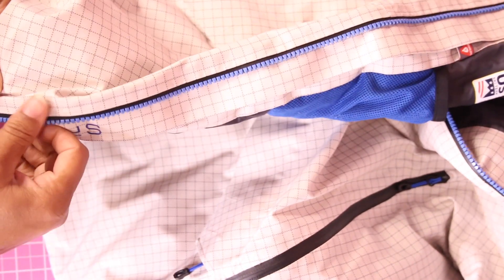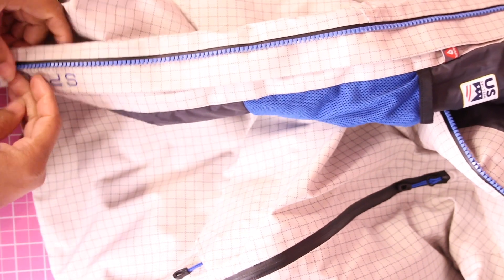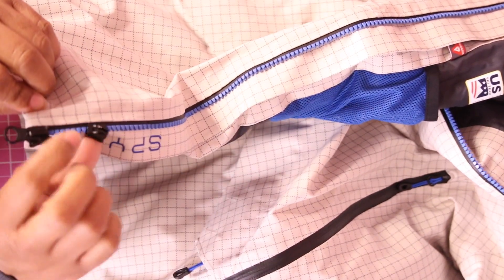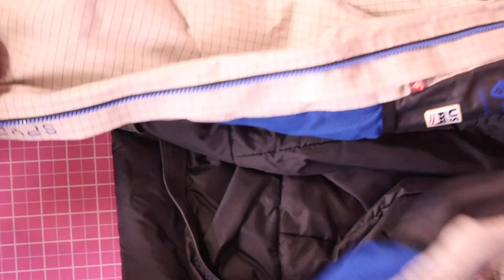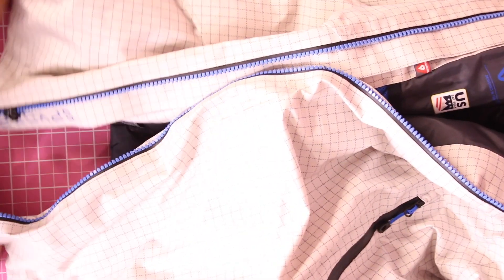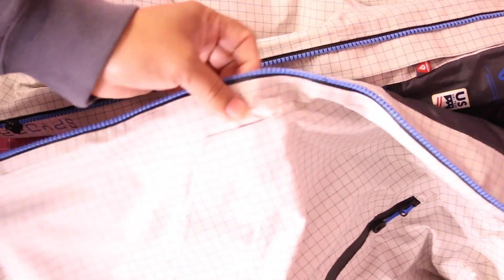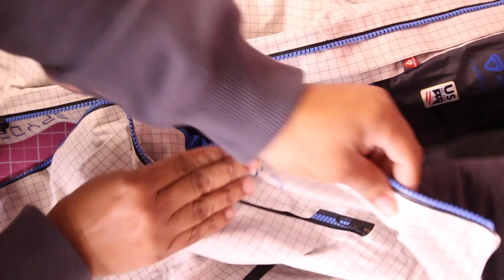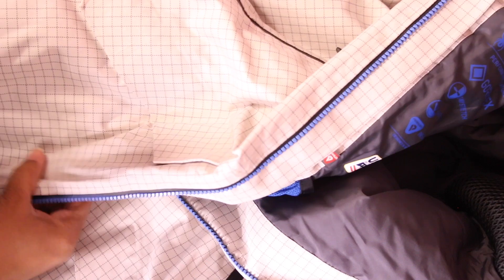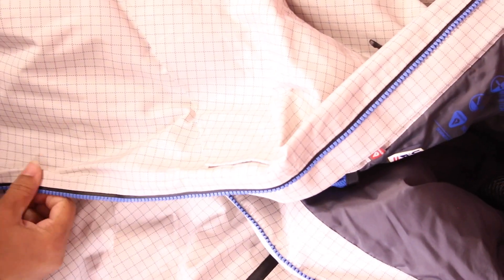Instead of replacing the whole zipper, we're going to just replace this top slider. Now the first thing you want to check for is to make sure there are no teeth missing on your zipper and that they're all in great shape. This one looks good, so let's go ahead and go over everything that you're going to need for this.